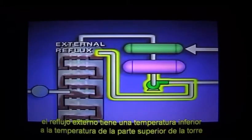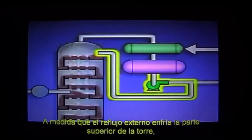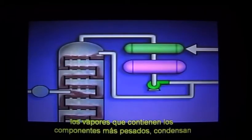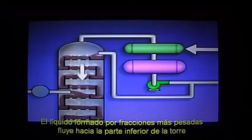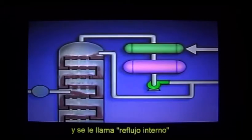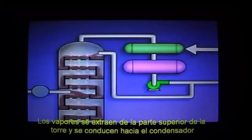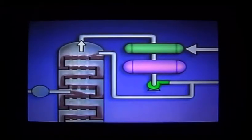Because it consists of liquid that was cooled in the condenser, the external reflux is cooler than the liquid in the top of the tower. As the external reflux cools the top of the tower, vapors made of heavier fractions condense. Liquid made of heavier fractions flows down the tower and is referred to as internal reflux. Meanwhile, the top of the tower is still hot enough to keep the lighter fractions in vapor form, and these vapors are drawn off the top of the tower and into the condenser.